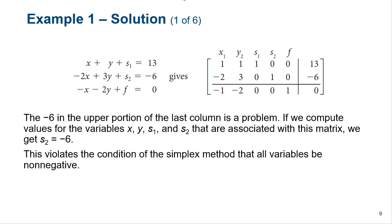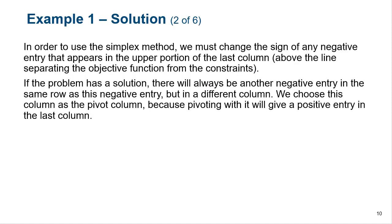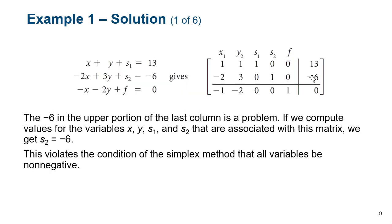We've got this negative two and this negative six, which causes a problem. If we compute the values for the variables x, y, slack one, and slack two associated with this matrix, we get S2 equals negative six. This violates the condition of the simplex method that all variables must be non-negative. To fix that, we change the sign of any negative entry that appears in the upper portion of the last column above the line separating the objective function from the constraints. So we have to worry about changing this negative six.